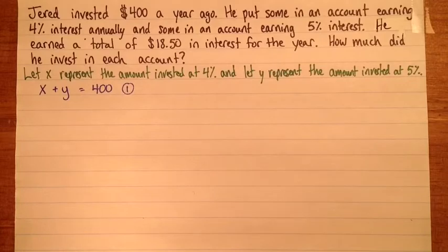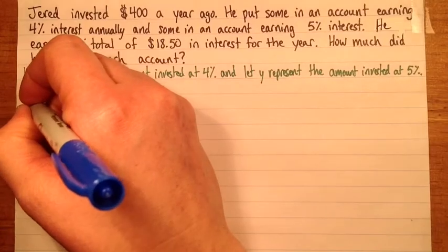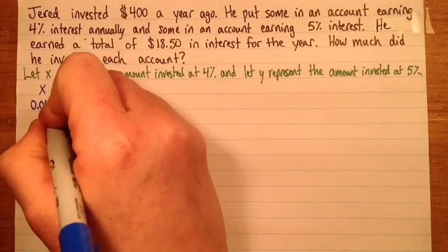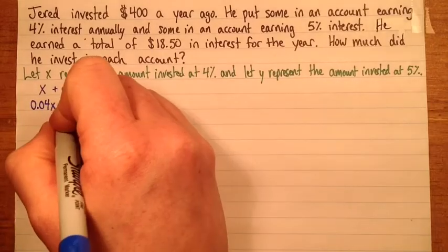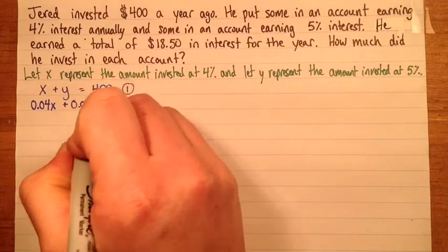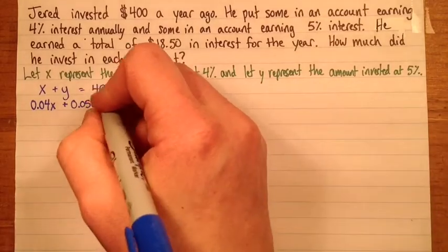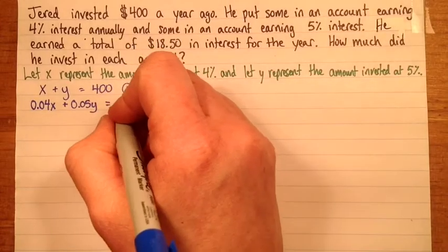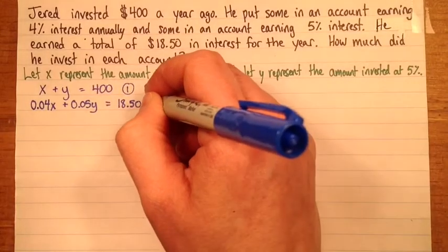And then the second thing to remember is that of means times. So 4% of X is going to be 4% times X. So 4 divided by 100 is 0.04. So that's 4% of X is 0.04X. So that's how much interest you earn in the first account. And then we'll do the same thing for the second account. So it'll be 0.05, because it's earning 5% interest, times Y, because we've invested Y at 5%. So this is an expression for how much interest you earned. And that should equal the total of $18.50. And that is equation 2.